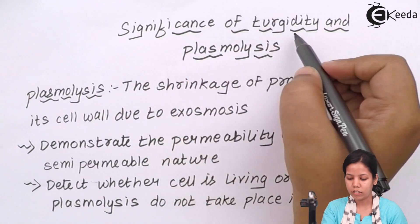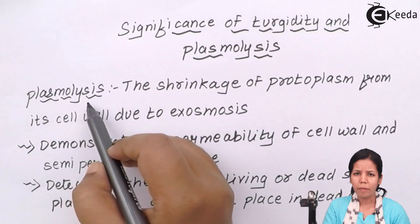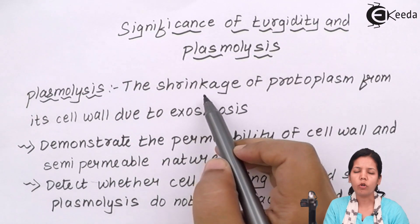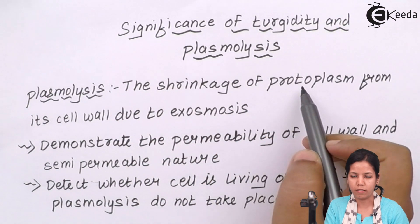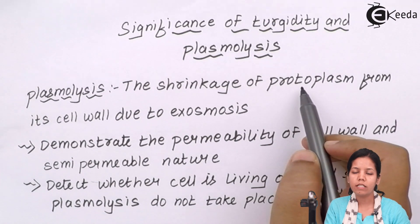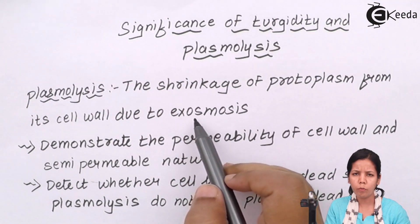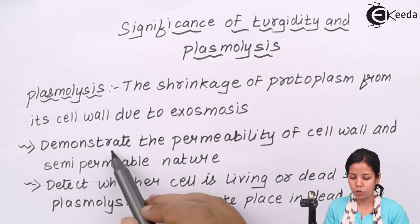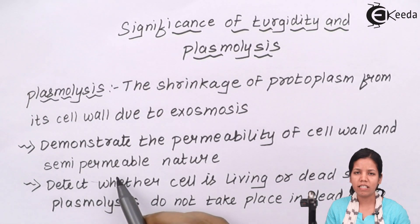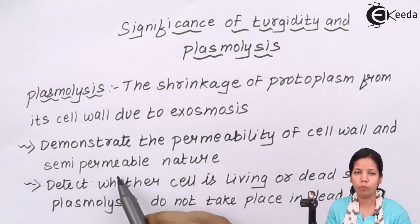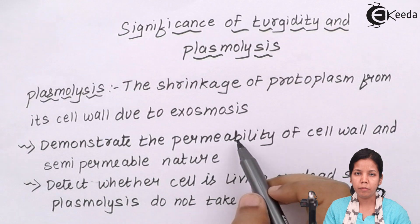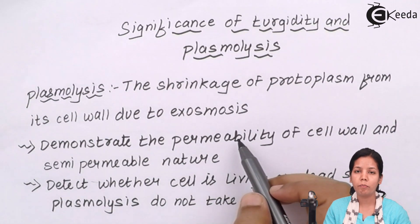Plasmolysis is basically the shrinkage or shortening of the protoplasm, or in simple language the cytoplasm, due to exosmosis. Exosmosis means movement outside, which could be movement of water or movement of ion molecules. With the help of plasmolysis we understand whether a cell is semi-permeable in nature — meaning it allows certain molecules to move out and disallows others. The permeability of a cell is checked with the help of plasmolysis.